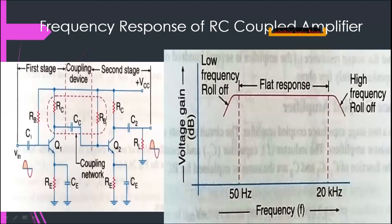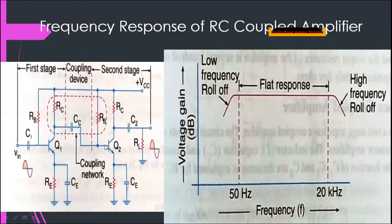At the high frequency range, the reactance of the capacitor is very small, and therefore it behaves almost like a short circuit. As a result, the loading effect of the next stage increases, which will reduce the gain. Besides this, there is a capacitance at the base-emitter region of the second transistor. At high frequencies, the base current of the transistor increases, and increasing base current reduces the current gain beta. These are the two reasons by which, at high frequency regions, the voltage gain decreases.